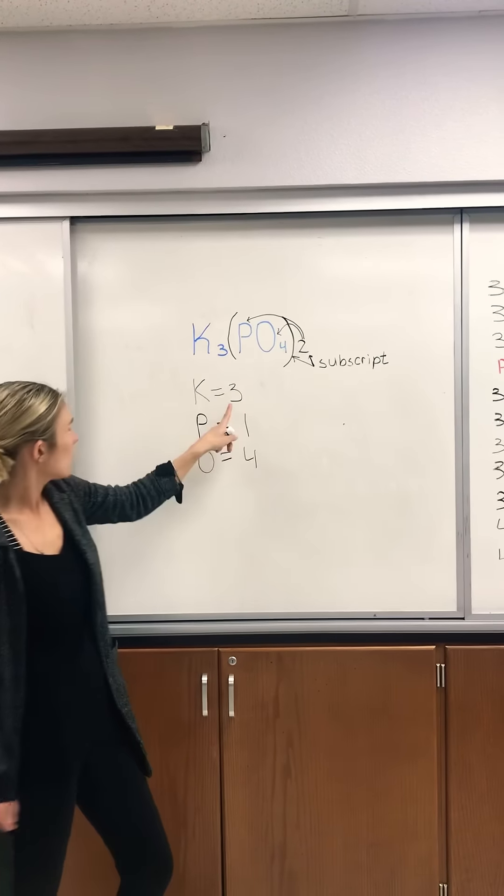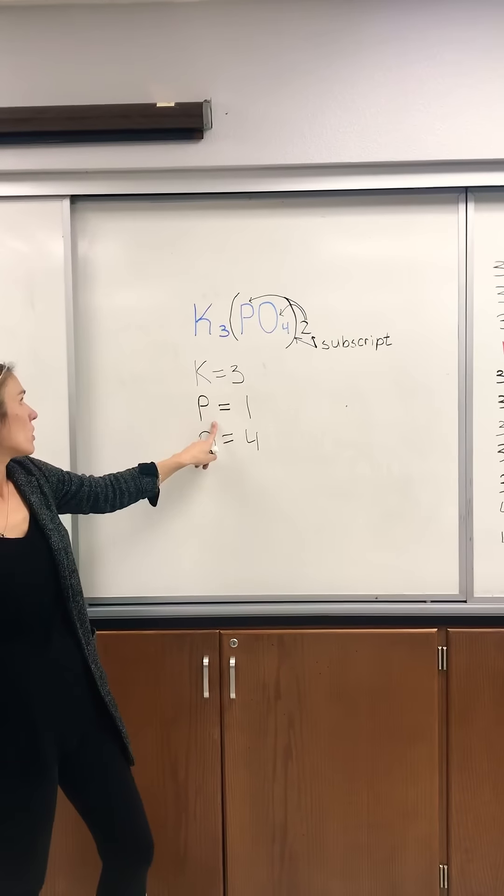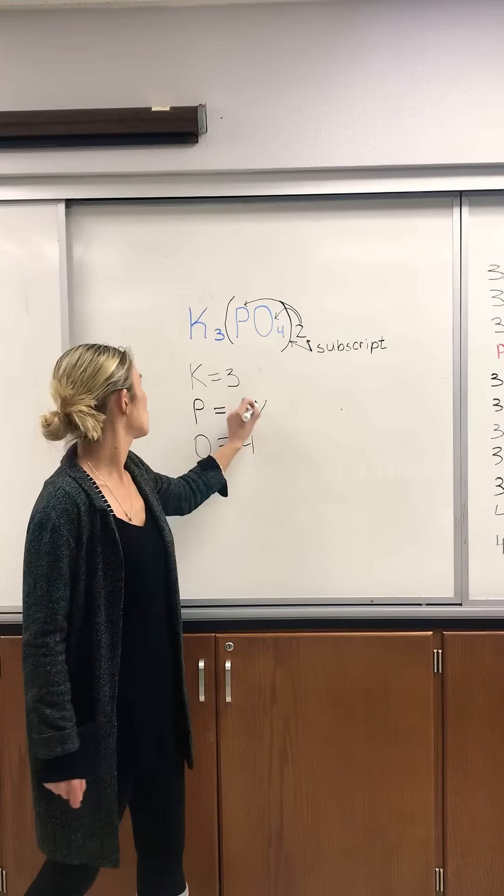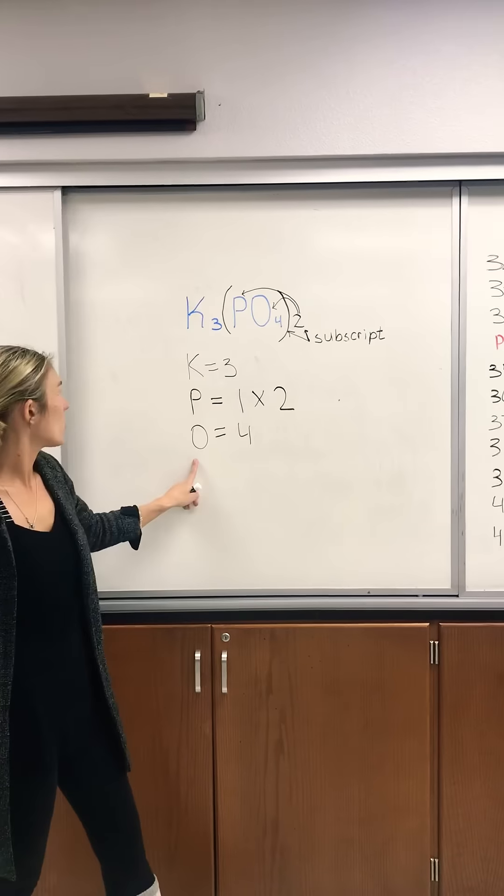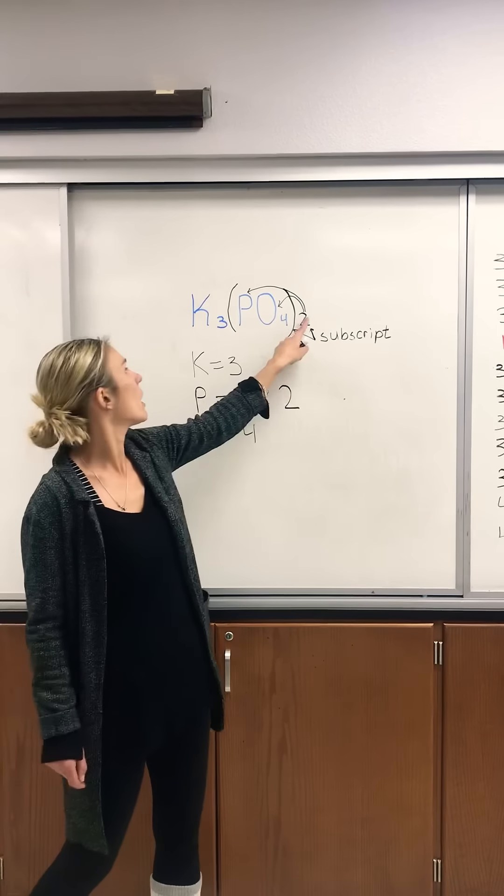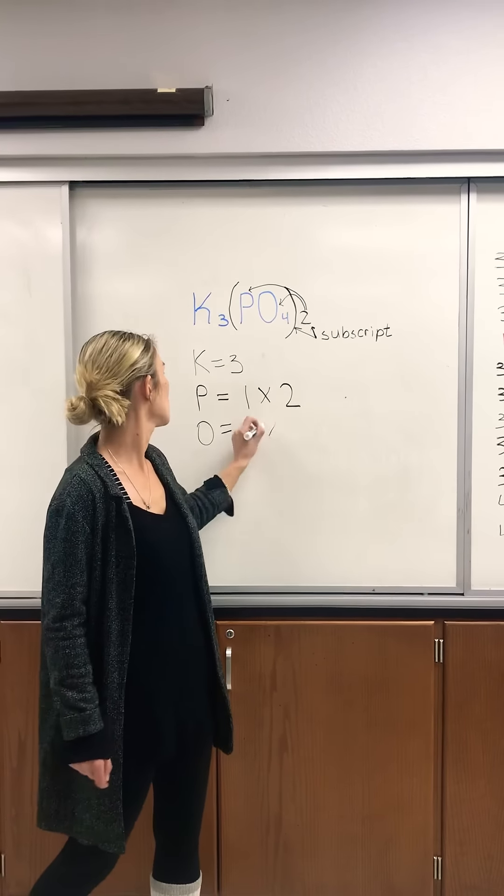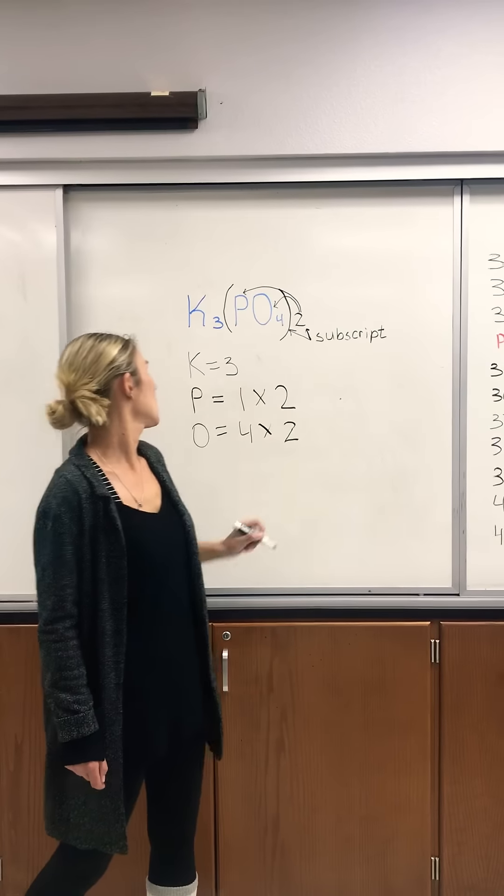So in this case, K stays the same. For phosphorus, instead of one, I'm going to put times two. And for oxygen, I already had four, now I have two. So four times two is going to be eight.